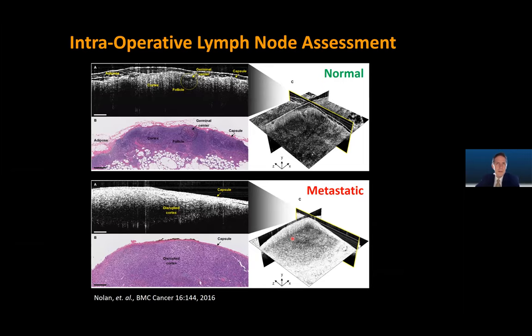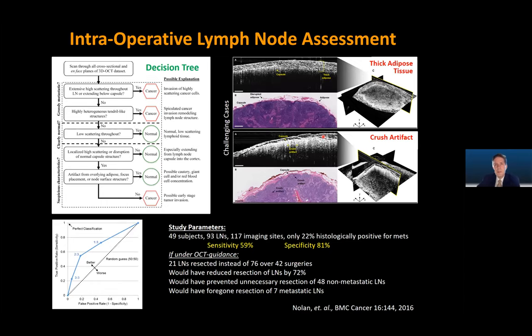In addition to margins, we can look at lymph nodes, which are filters that collect tumor cells coming from a tumor. We notice very different optical properties between a normal lymph node and a metastatic one — there's a reaction when tumor cells are present, and scattering properties change. We did a study on quite a number of subjects. Our sensitivity and specificity weren't as high as in the margin study, partly due to artifacts such as thick adipose tissue or crush artifacts. Still, we would have prevented many normal lymph nodes from being removed had the surgeon been using this technology.